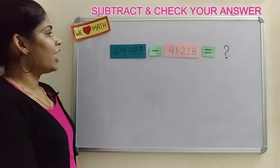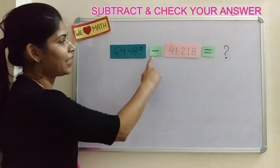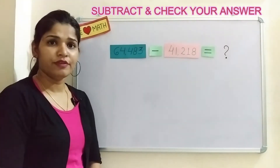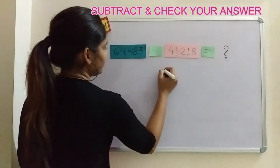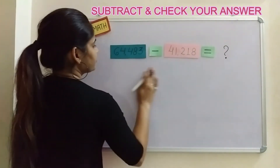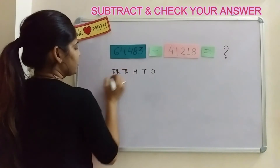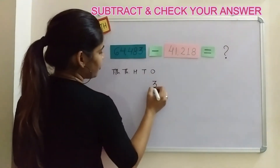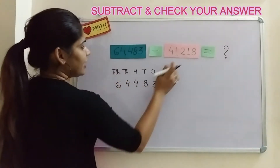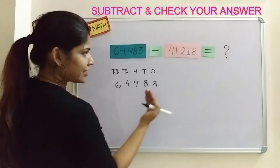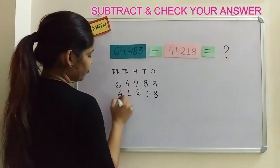So let us see how to do this. As I have written two numbers on the board: 64,483 minus 41,218. What will we get, children? For this, first of all we need to perform the subtraction. I'm going to write down the place value chart: ones, tens, hundreds, thousands, ten thousands. I need to write down the numbers from the right hand side: 3, 8, 4, 4, 6. Then I'm going to write the number being subtracted from the right hand side: 8, 1, 2, 1, 4.